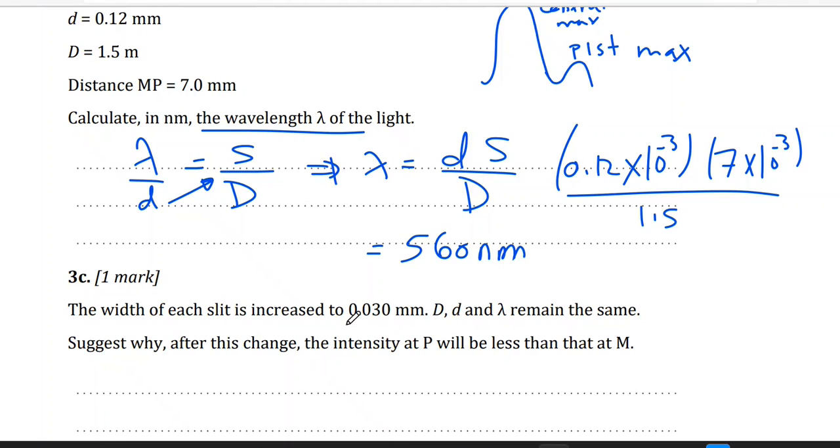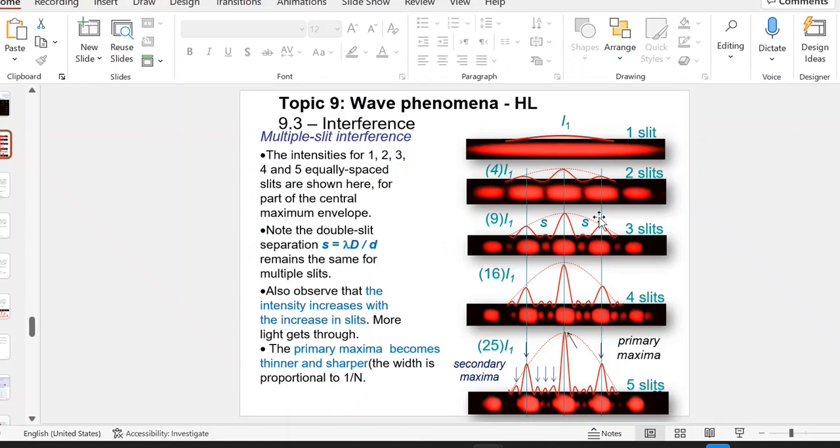The width of each slit now is increased. d and lambda remain the same. So justify after this change, the intensity at P is less than the intensity at M. If you notice here, the interference pattern also is enveloped. If we have double slit, the interference pattern is enveloped by a single slit, so the intensity will be less.